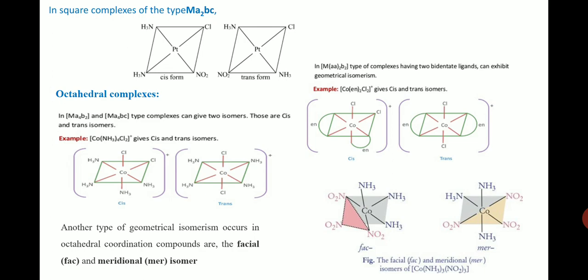For square planar complexes of the type MA₂BC, M is the metal, A₂ are two identical ligands, B is one ligand, and C is another ligand. In the cis form, the two amine ligands (A₂) are adjacent to each other, with B being chlorine and C being nitrate. In the trans form, the amine ligands are opposite to each other, making it a trans isomer.